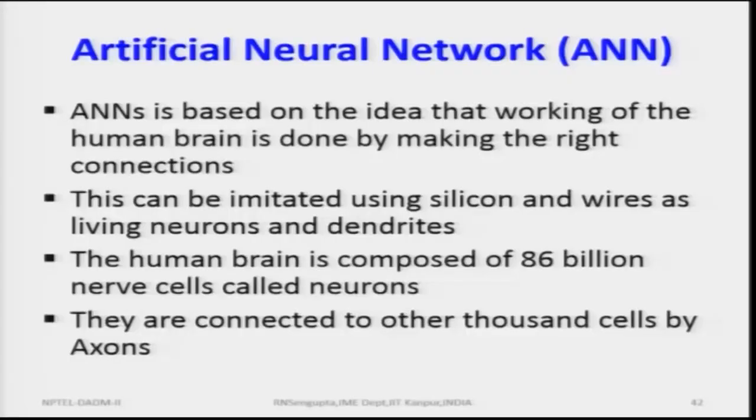Artificial neural network — ANN — is based on the idea that the working of the human brain is done by making the right connections. There are nervous system neurons, synapses, joining portions, and electrical connections through which information is passed as electrical signals. If you touch a very hot thing or experience pain, the nervous system transmits that information very fast. If there are dead cells with no neurons, you obviously do not feel the pain — which is why when a barber cuts your hair or you clip your nails, you do not feel it.